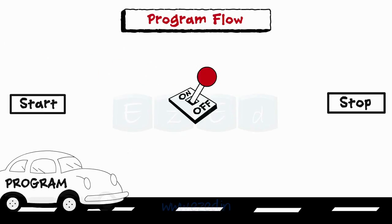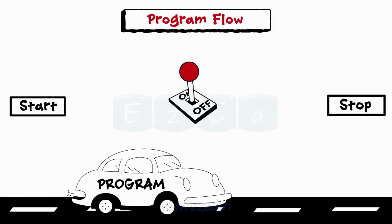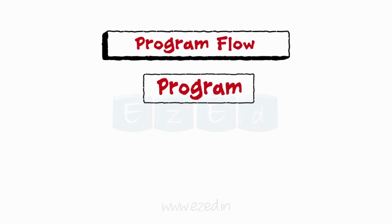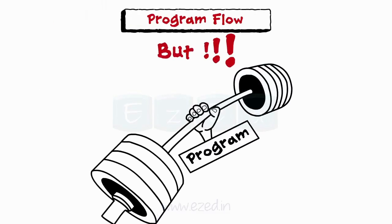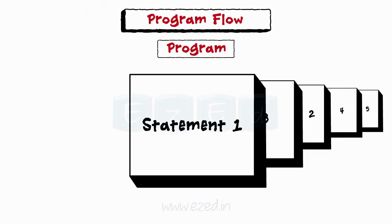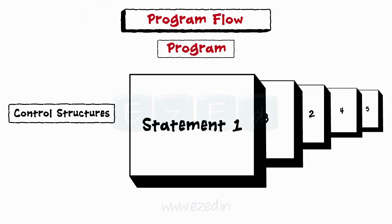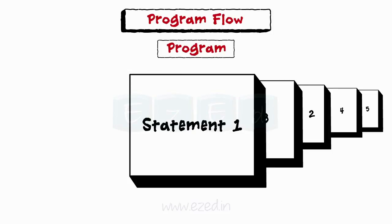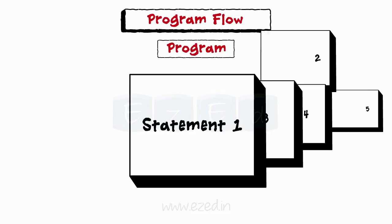Let's understand how control flows from one statement to the next while executing a program — this is called program flow. Controlling the flow of a program is a very important aspect of programming. A program consists of a number of statements executed sequentially, one after the other. But we can develop powerful programs by changing the sequential order. Control structures are added to control the execution of a program and to alter the sequential flow.